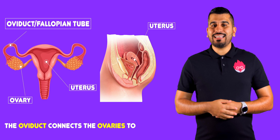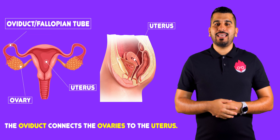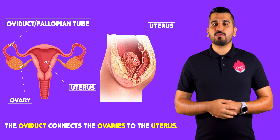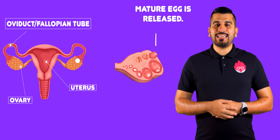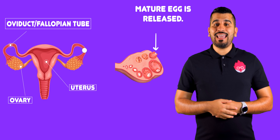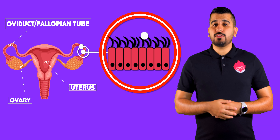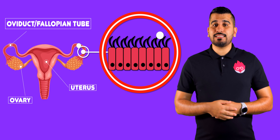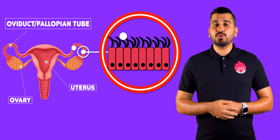The oviduct connects the ovaries to the uterus, and is sometimes referred to as the fallopian tube. Every 28 days, approximately, an egg matures and is released from the ovary. The oviduct contains cilia, which moves the egg towards the uterus.